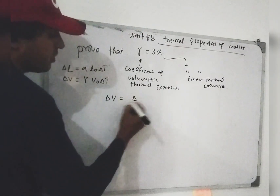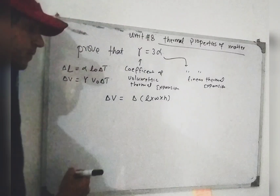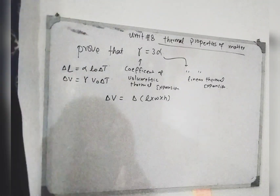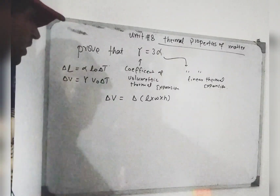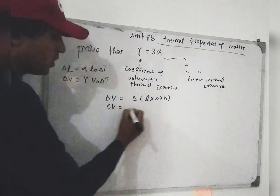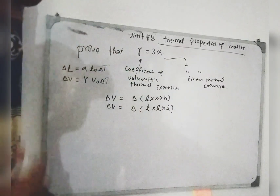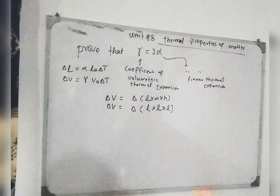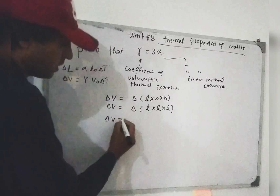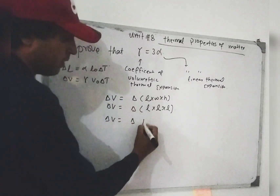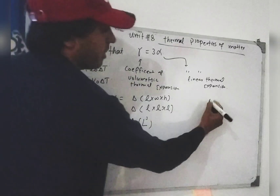For the volumetric expansion, we look at volume as length multiplied by width multiplied by height. For a cube, delta V is equal to delta of L cubed, where length equals width equals height.